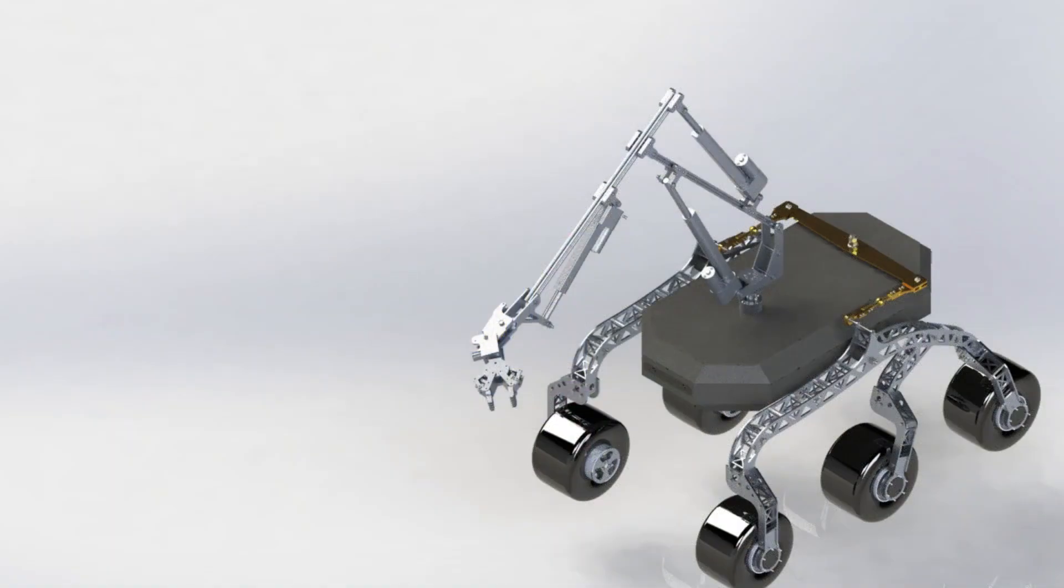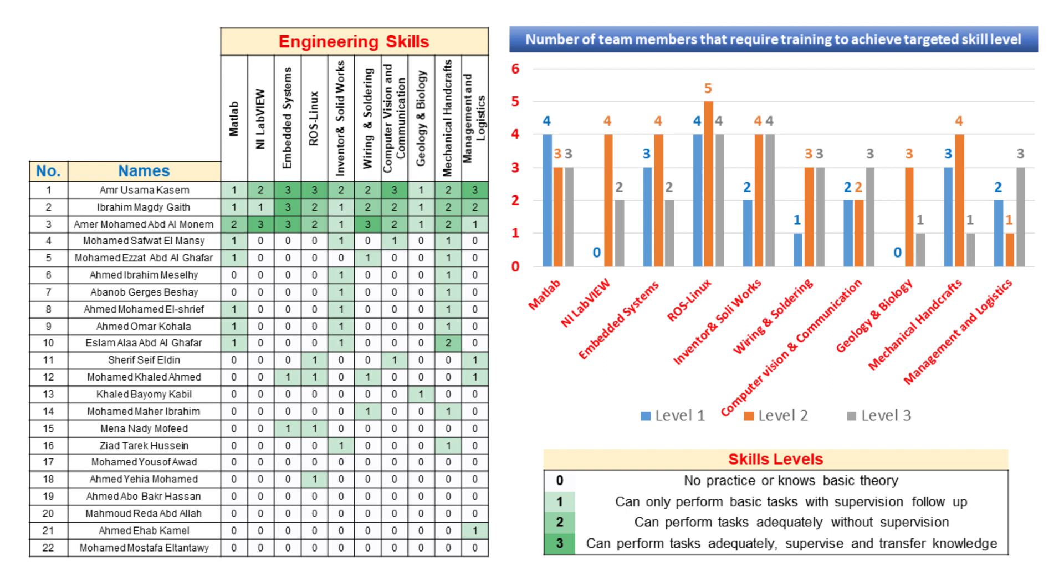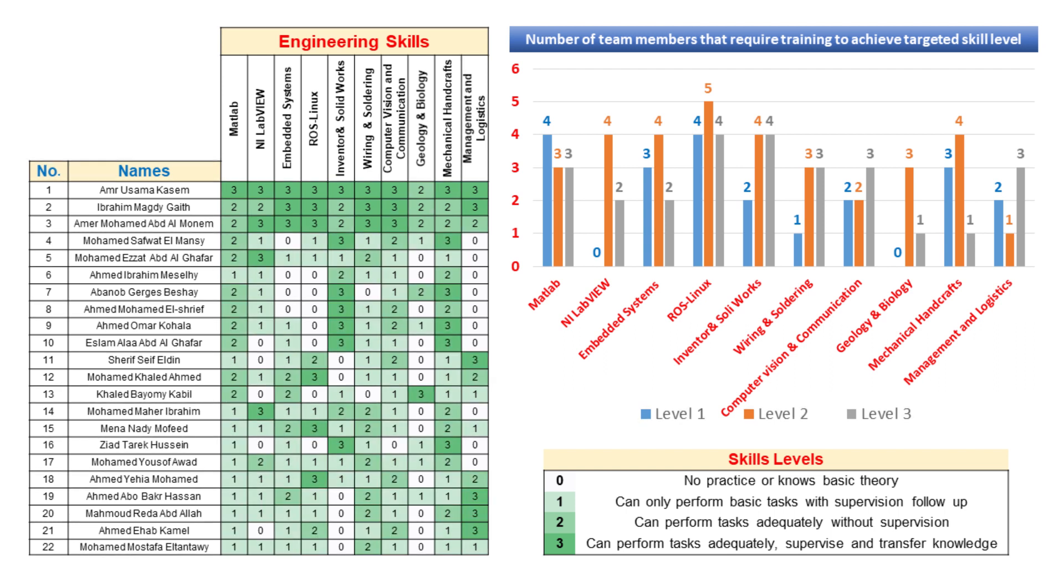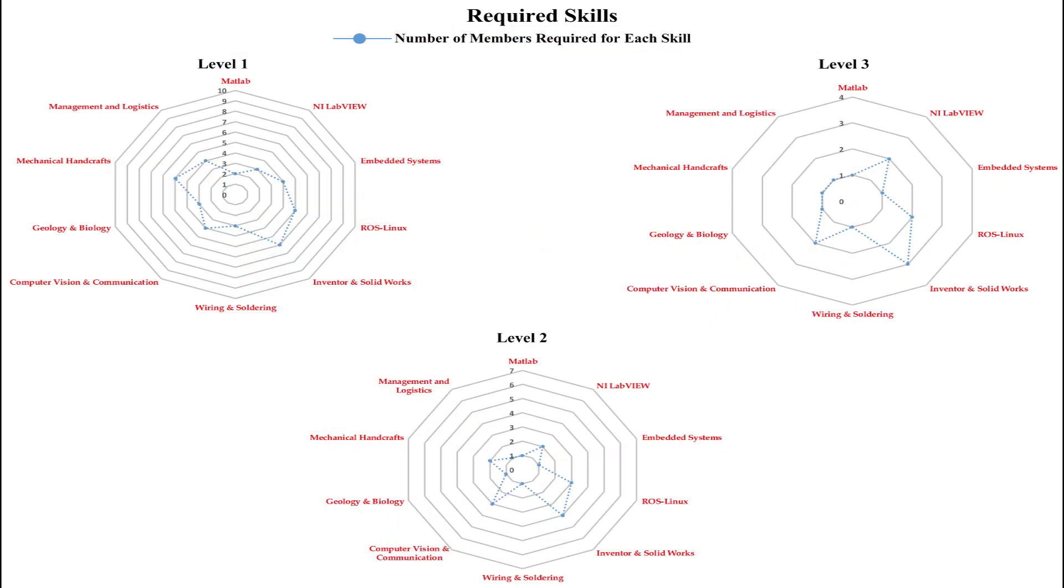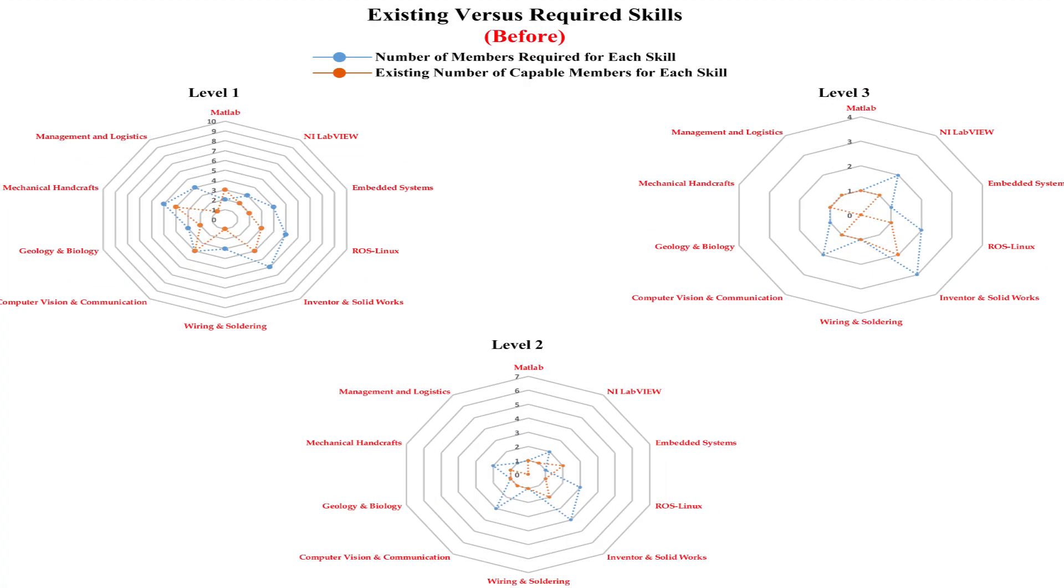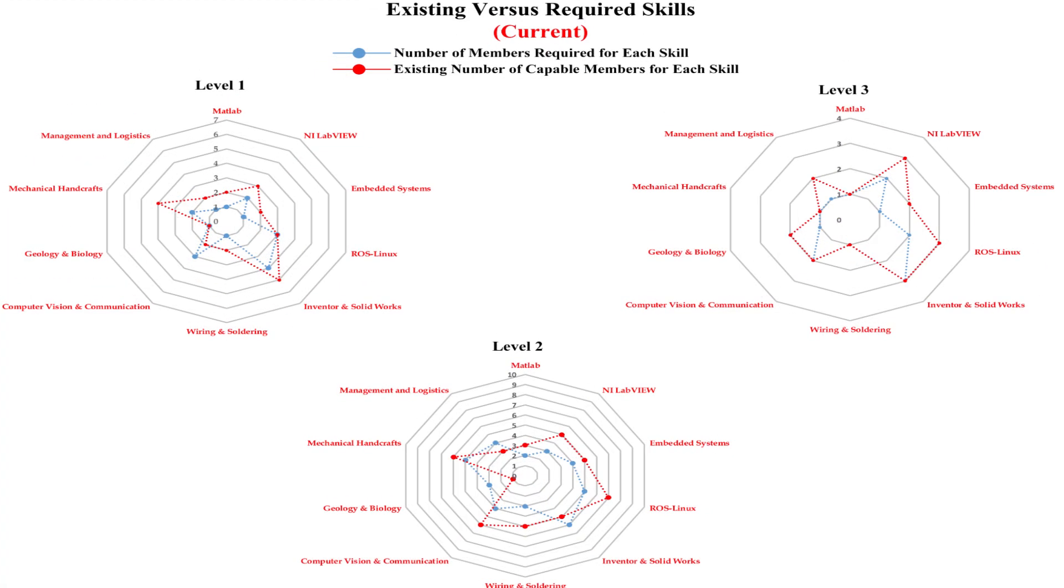We take into consideration the team requirement skills and the members' development and their ability to do tasks. In the shown figures we see the number of skills required from the team member, how he was, how he is, and the development of each member.